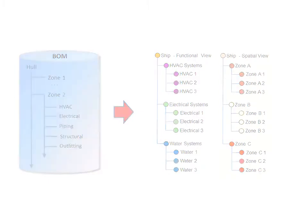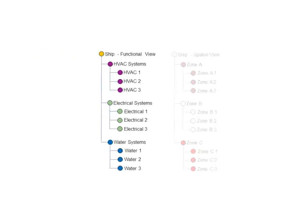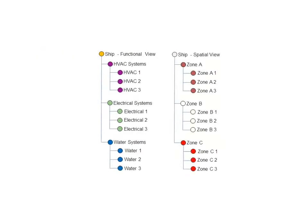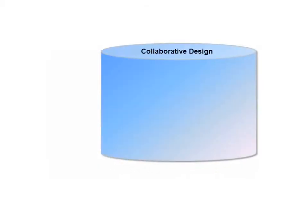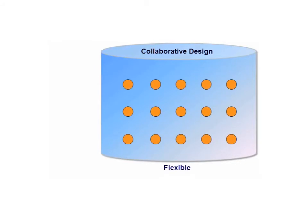For example, functional, spatial, and physical schemes need to support system-driven product development within a collaborative design environment, and without affecting the definitions of the design. Support for collaborative design improves user and team productivity by providing a flexible concurrent working environment.